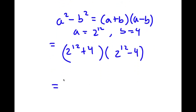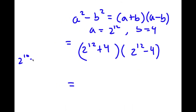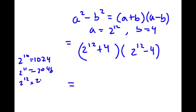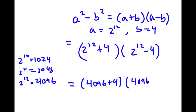Now, 2 to the power of 12: since 2 to the power of 10 is 1,024, 2 to the power of 11 is double that, which is 2,048. And 2 to the power of 12 is double of 2,048, which is 4,096. So now I have (4,096 plus 4) times (4,096 minus 4).